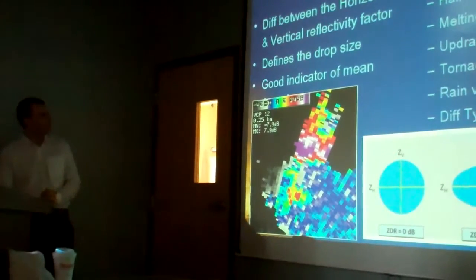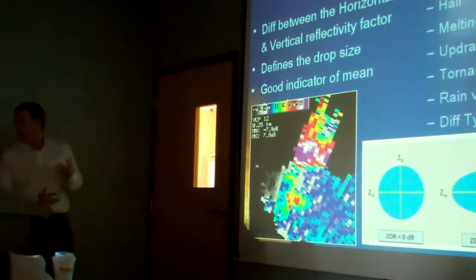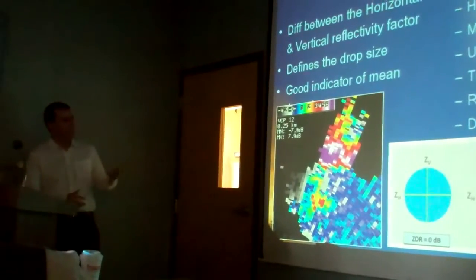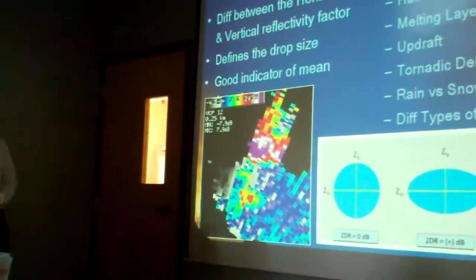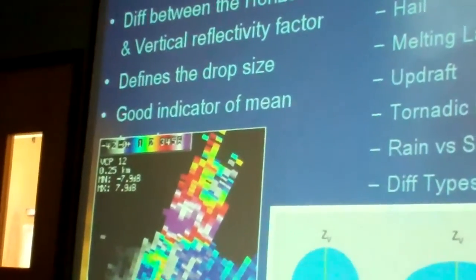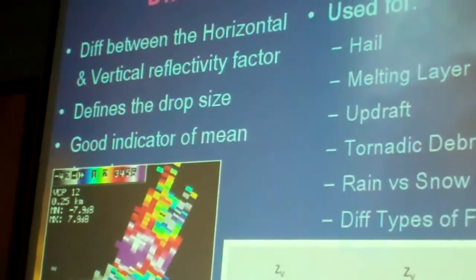So it defines the drop size, and what we can use it for is hail, melting layer, updraft, tornado debris, rain versus snow, and different types of frozen precipitation.